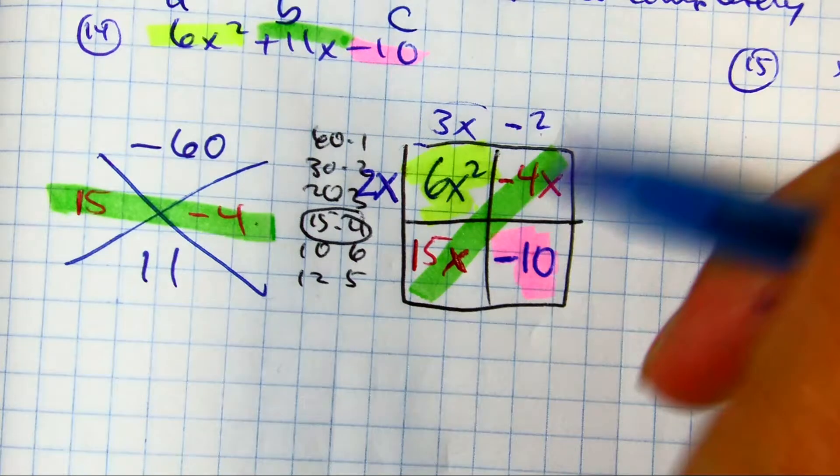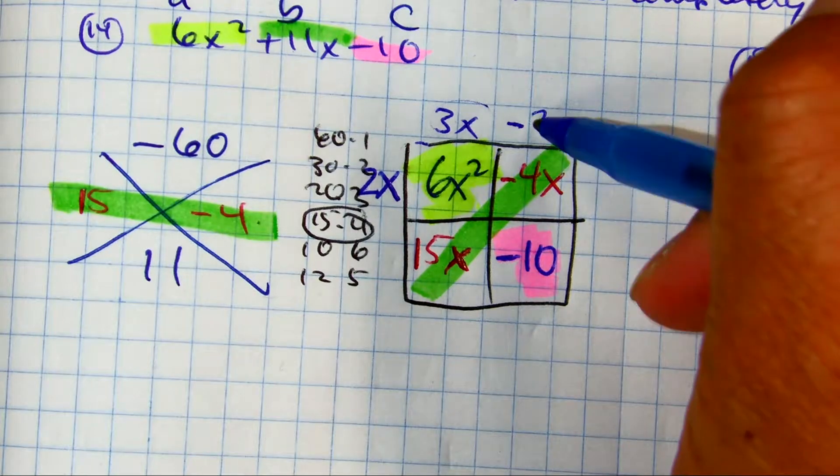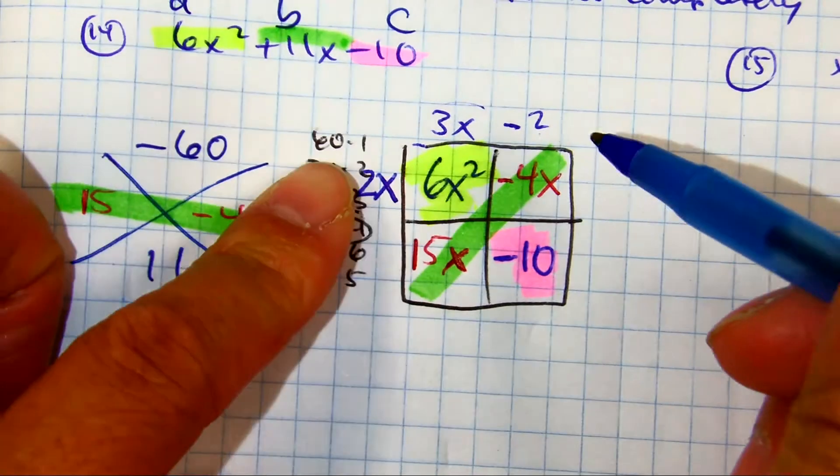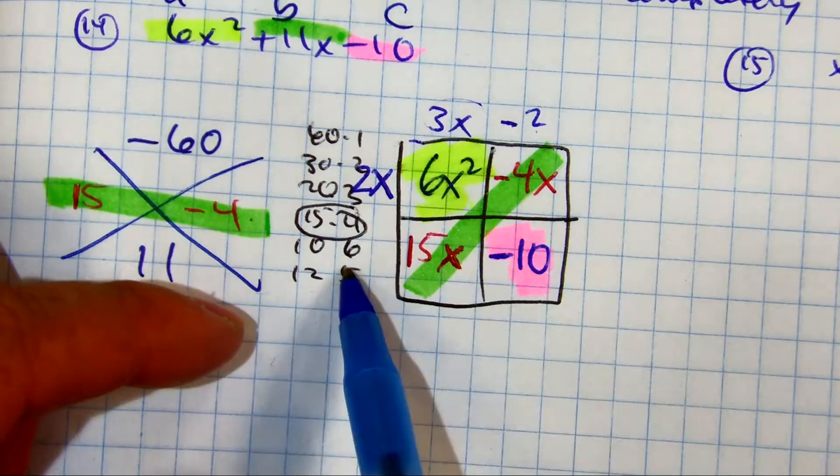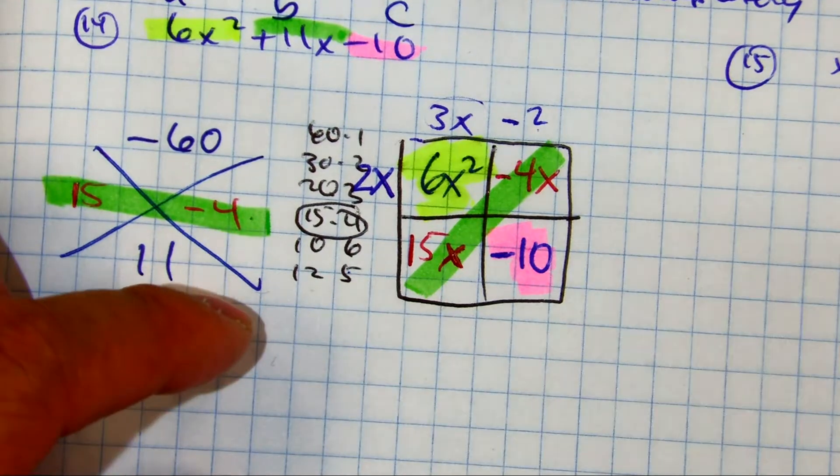She got the negative 2 by taking out the common factor. Or you can think of 2X times something equals negative 4X. Sophie, 3X times something equals 15X. 5.